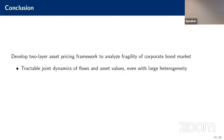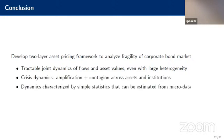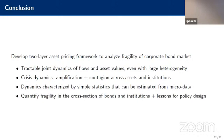To close: this paper develops a two-layer asset demand system to analyze fragility in the corporate bond market. We generate tractable joint dynamics of asset prices and flows and show how crisis dynamics unfold. Using simple statistics estimated from micro data, we can quantify fragility in the cross section of both bonds and funds, and glean lessons for policy design. Thank you.